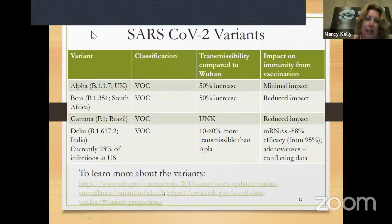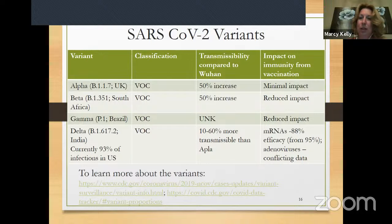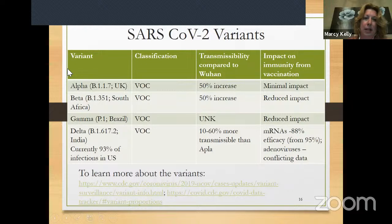The alpha variant — what we used to call the UK variant — had a 50% increase in transmissibility, meaning it was 50% easier to spread from individual to individual, with minimal impact on immunity from vaccination. The beta variant — the South Africa strain — again had a 50% increase, with a little bit of reduced impact from vaccination.